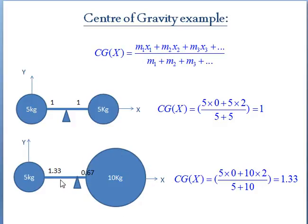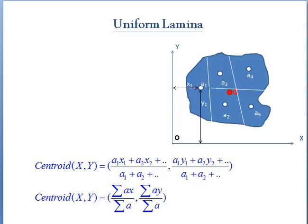Suppose the second mass is bigger, 10 kg, and if we substitute x1 as 0 and x2 as 2, and m1, m2 as 5 and 10 kg, then center of gravity will be at 1.33 meters. So from this you can see the center of gravity will be closer to the heavier mass than the lighter mass.